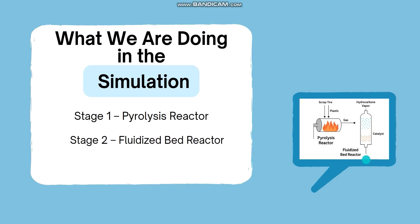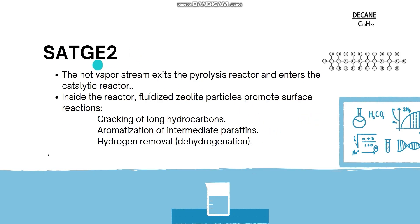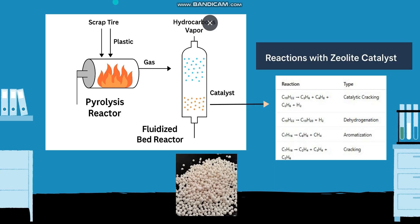Inside the fluidized bed catalytic reactor, the vapors come into contact with zeolite catalyst particles suspended by a flow of vapor, which provides excellent surface area for reactions. We have two stages: stage one, where we add waste tires and plastic, heat them up, and obtain long-chain hydrocarbons. Stage two, which we will simulate, involves cracking of long-chain hydrocarbons into smaller ones like propylene, butane, and ethane, along with aromatization and dehydrogenation.